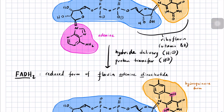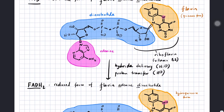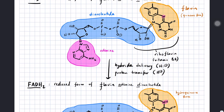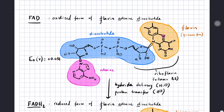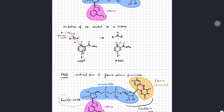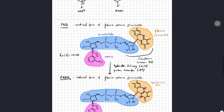The reduced form of flavin has a new nitrogen-hydrogen bond here and another one there. To get from FAD to FADH2, you have to deliver H minus and H plus, or you can think of it as delivering two protons plus two electrons. Flavins are also known to participate in single-electron-type reactions. Interestingly, the reduction potential of the flavin is plus 0.031 volts — a much smaller reduction potential, suggesting that FAD is less reactive than NAD+.